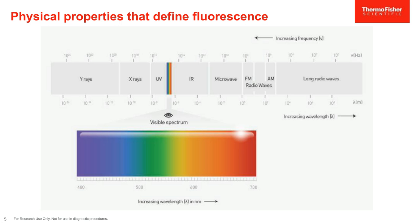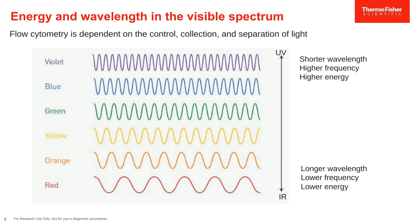Here we see the electromagnetic spectrum with visible wavelengths and their corresponding colors highlighted. Fluorophores generally emit within the visible light portion of the spectrum, but we have been using the UV area for decades, which are the shorter wavelengths, and in more recent years the near-IR portion, which are the longer wavelengths. Flow cytometry is dependent on the control, collection, and separation of light. There is an inverse relationship between energy and wavelength — shorter wavelengths have higher energy, while longer wavelengths have lower energy.